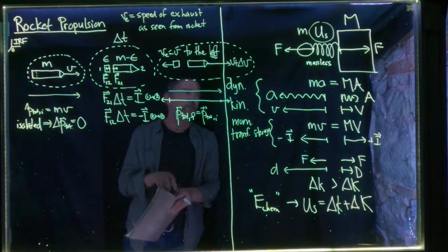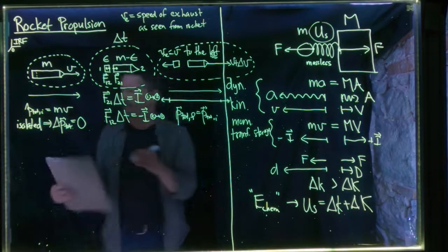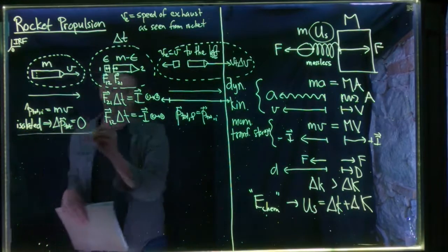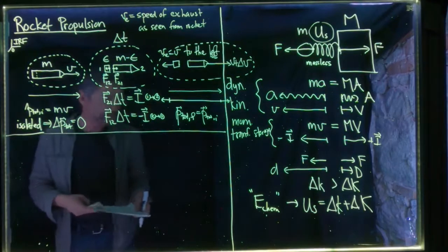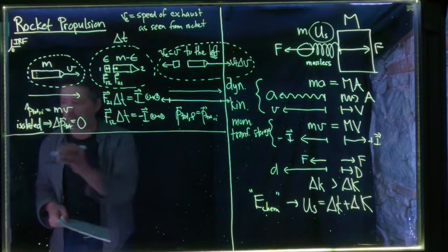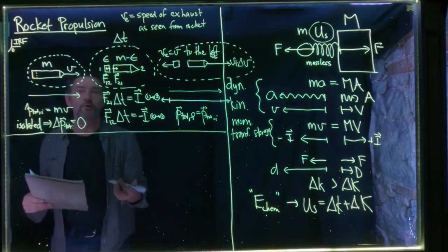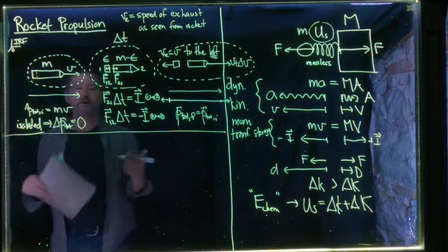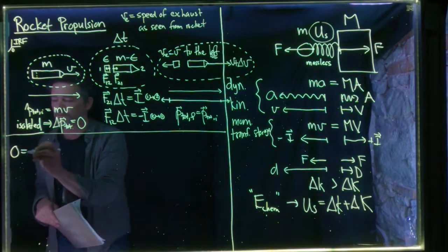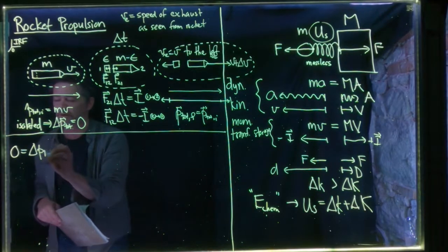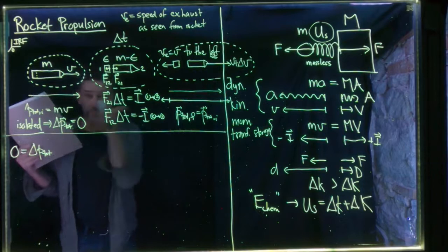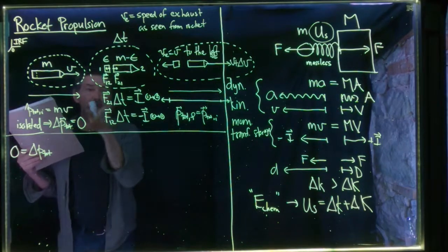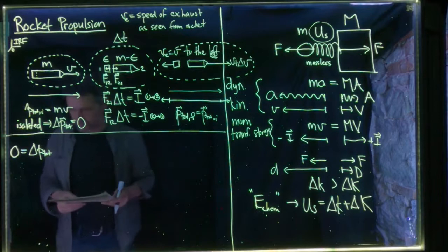Now let's derive the rocket equation. We apply conservation of momentum: for an isolated system, zero equals the change in total momentum. Since everything is in the x-direction, we can drop vectors and deal with x-components: delta P_total = P_total_final minus P_total_initial = 0.